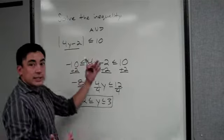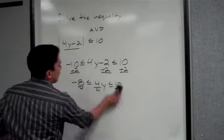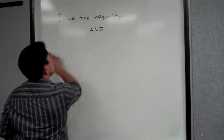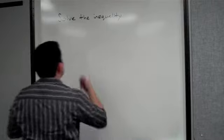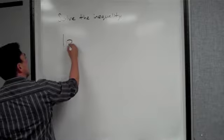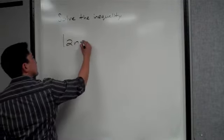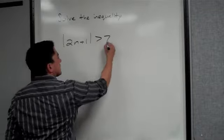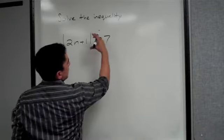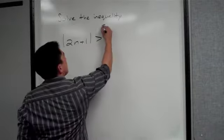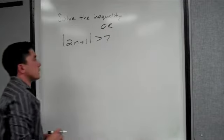Now, the next one, since we just did an and, now we're going to do an or. So if you have the absolute value of 2n plus 1 is greater than 7. Notice it's facing this way now. The absolute value is greater. We call this or.